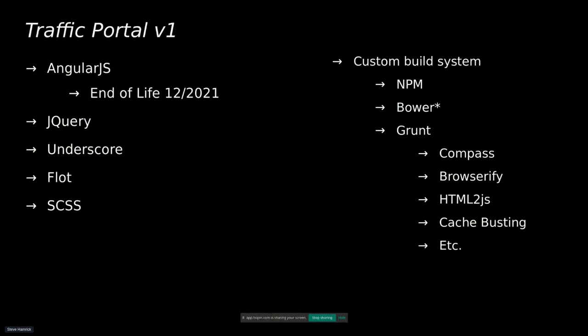Traffic Portal v1 is built using AngularJS, jQuery, Underscore, Flot — which is our charting library — and Chart.js as well. The main impetus behind this rewrite is that AngularJS is end of life at the end of this year. It was actually supposed to already be end of life, but thanks to everybody's favorite disease they pushed it back, so we got some extra time.